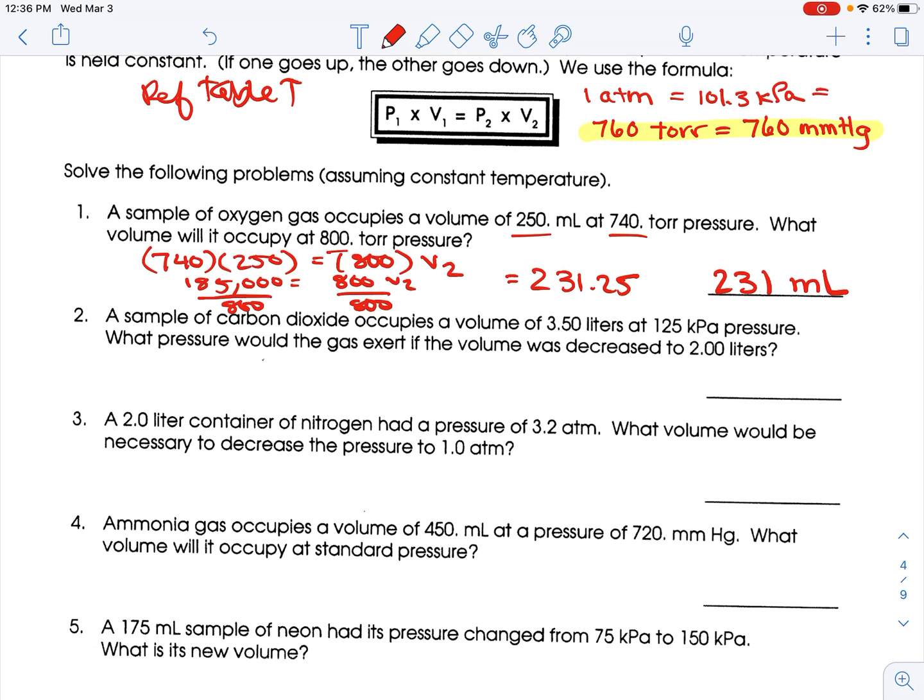A sample of carbon dioxide occupies a volume of 3.50 liters at 125 kilopascal pressure. What pressure would the gas exert if the volume was decreased to 2 liters? So, when you read it, we start with 125 kilopascal and 3.50. We don't know what our new pressure is, and this is 2 liters.